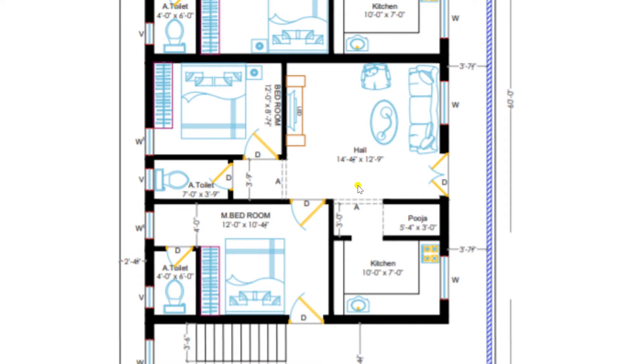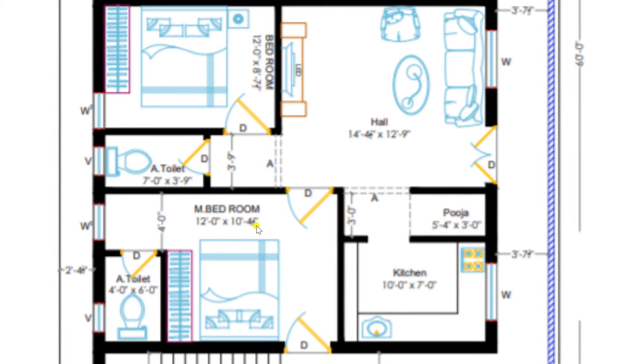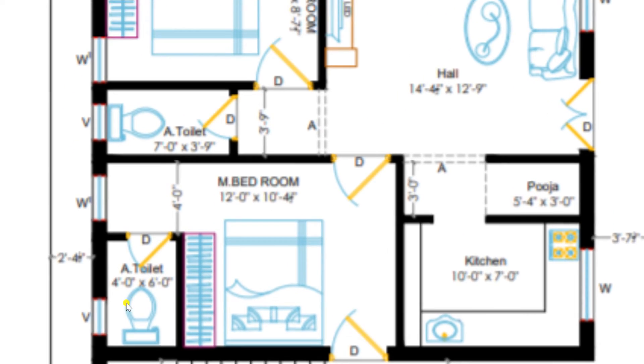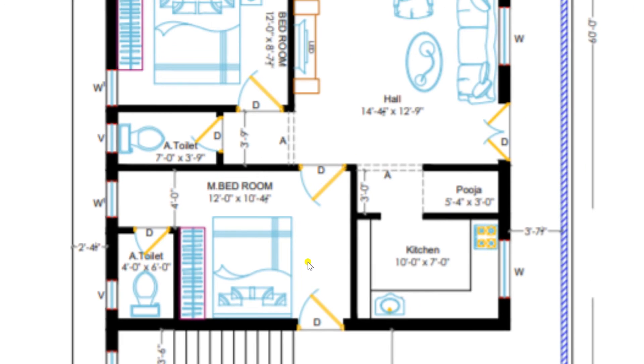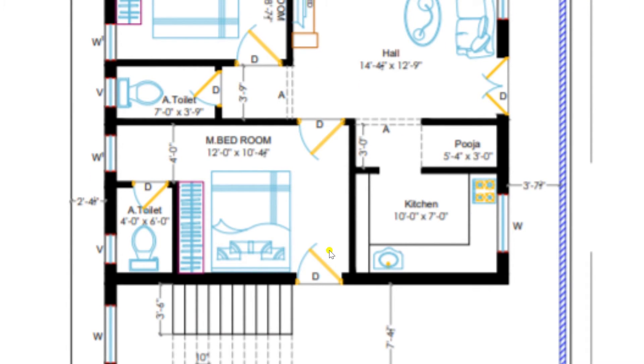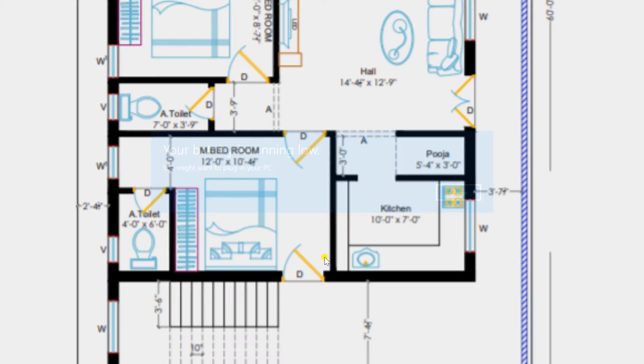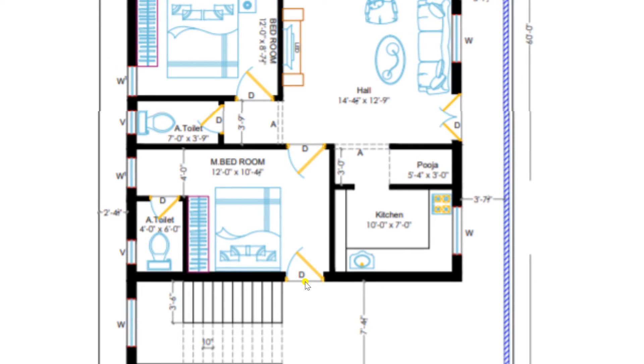Through the hall I am entering to one more bedroom of our plan of size 12 feet by 10 feet 4 inches. In this bedroom we have plotted a bed along with wardrobe. It is having an attached toilet of size 4 feet by 6 feet. This bedroom is also having one more entrance, as I discussed — you can view one more entrance we have provided here.